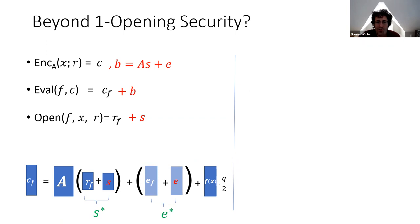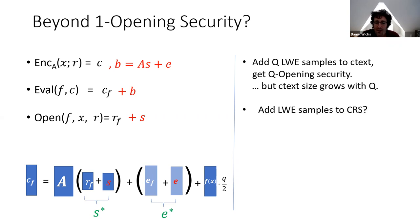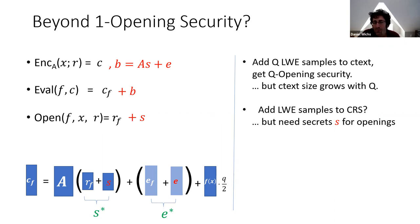How do we generalize beyond one-opening security to security with Q openings? One idea is to add Q different LWE samples to the ciphertext, but that would make the ciphertext size grow with Q, which is not what we want — we need encoding sizes independent of Q. Another option is to put these LWE samples in the CRS, but that doesn't work either because when we give out an opening we need to know the LWE secrets S contained in those samples, and if they're just in a common reference string, nobody knows the secrets, including the honest algorithms. Instead, we solve this by introducing the new primitive called oblivious LWE sampling.